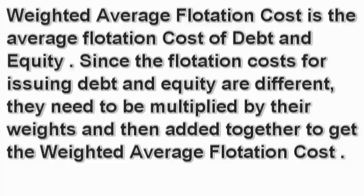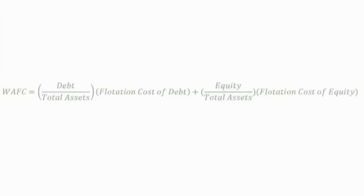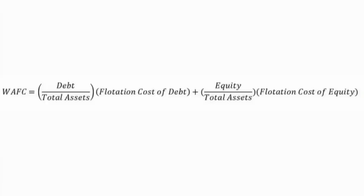The formula for weighted average flotation cost is: debt divided by total assets, multiplied by the flotation cost of debt, plus equity divided by total assets, multiplied by the flotation cost of equity.